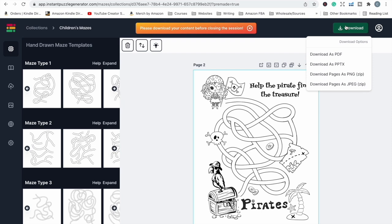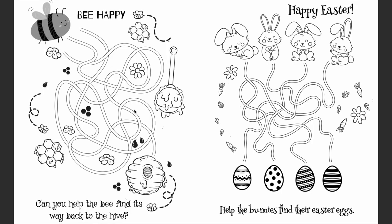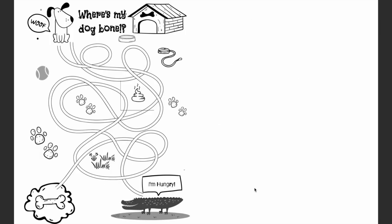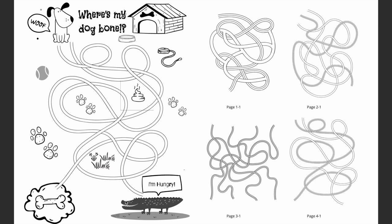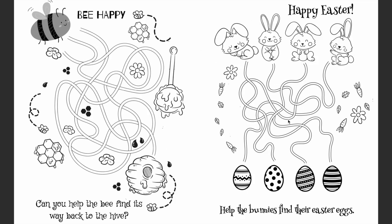Let me show you the extra pages I made off camera. There's the bee page, then the pirates page, an Easter page with four entry points and four exit points where you find which bunny matches which egg, and a dog bone page with two entry points where one path leads to the bone and one to a hungry alligator. I especially love the Easter one with four entries and exits — and as a side note, Easter's coming up, so it's a perfect time to create books for Easter.